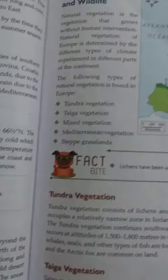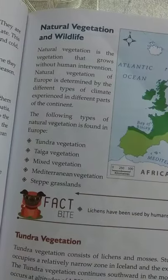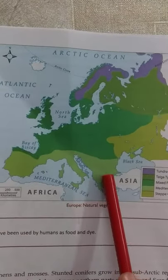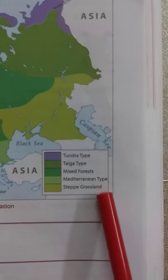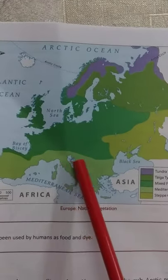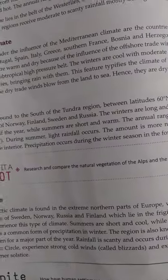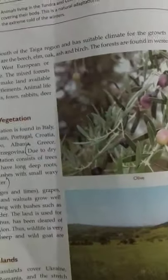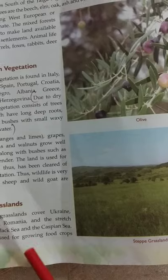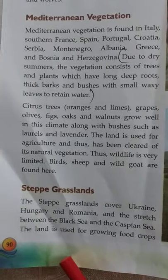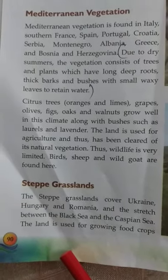On the map on page 89, a shade of light green is used for the Mediterranean region. See in the index — it is written 'Mediterranean type' — and that is the location on the map.